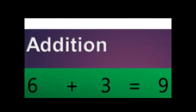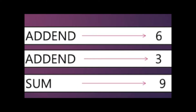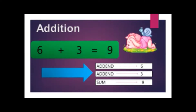First of the four basic operations is addition. The parts of addition are addend and sum. You can see here that it has an upper addend and a lower addend. The upper addend is six and the lower addend is three, and we call the answer the sum — that is number nine. Those are the parts of addition.